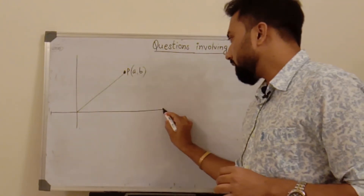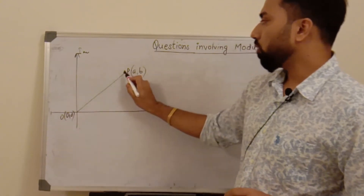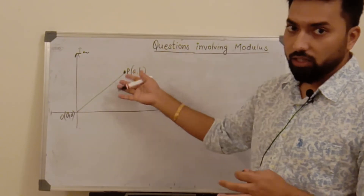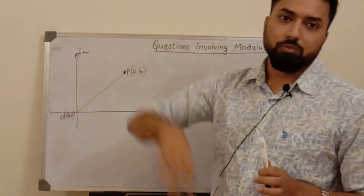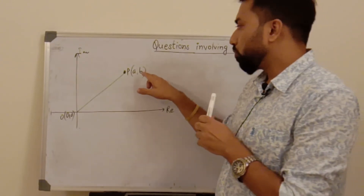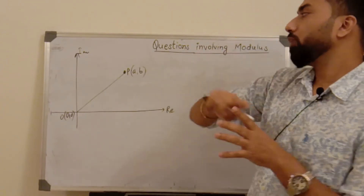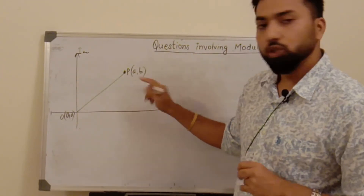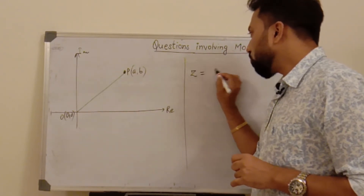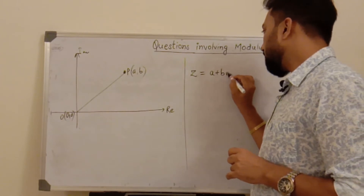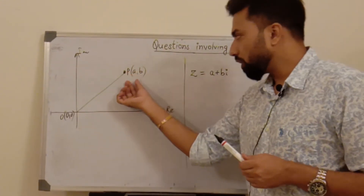This is the real axis and this is the imaginary axis. Corresponding to any point on the Argand plane, there is a one-to-one correspondence with the numbers of the complex number system. For example, corresponding to the point (1, 2) there is a unique complex number 1 + 2i, and corresponding to 1 + 2i there is a unique point (1, 2). So if z = a + bi, this uniquely corresponds to point (a, b) and vice versa.